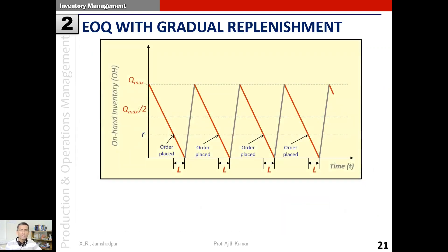As a result, the schematic diagram changes as follows. In the basic EOQ model we had a vertical line representing the addition of the ordered quantity to inventory, but now we have a sloping line. When demand depletes the existing inventory to zero, the ordered quantity arrives and gets added at a rate - that rate is not instantaneous, it happens over a period of time.